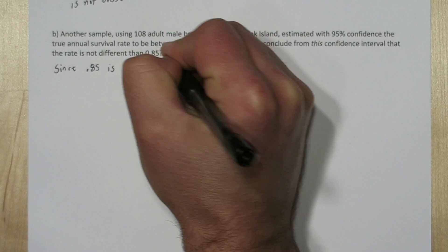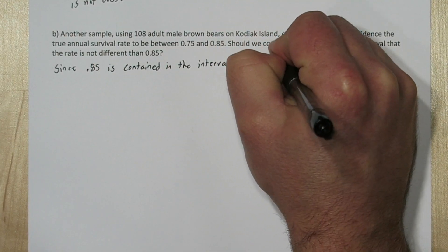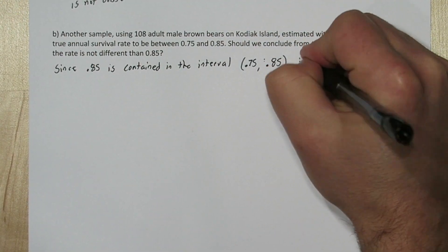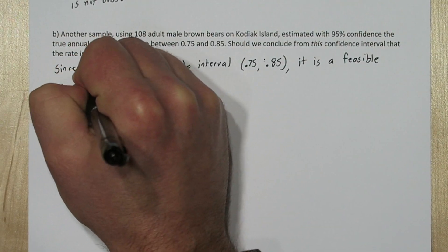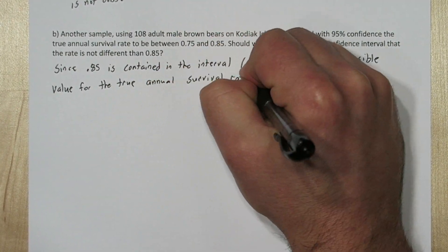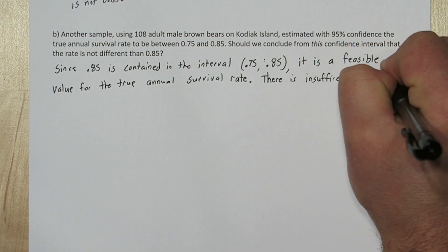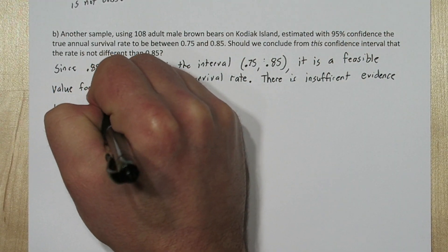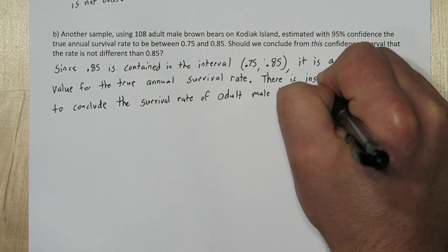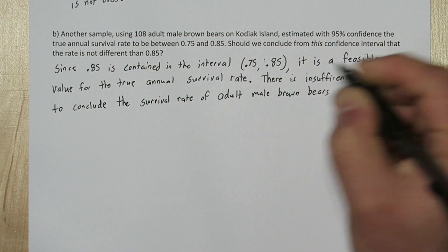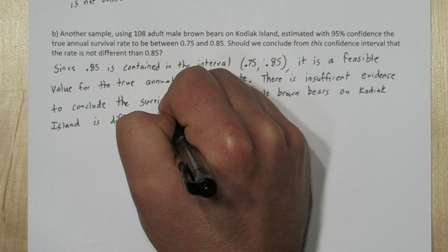Part b is different. Since 0.85 is contained in the interval, it is a feasible value for the true annual survival rate. So in this case, we have to say there is insufficient evidence to conclude the survival rate of adult male brown bears on Kodiak Island is different than 0.85.